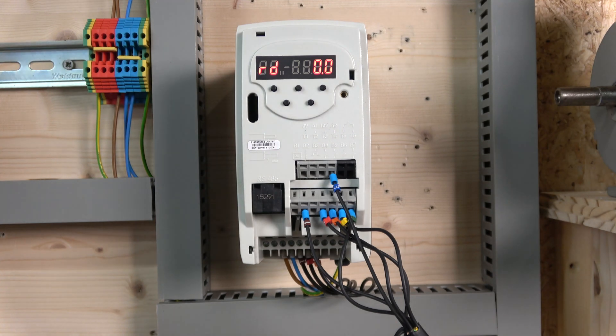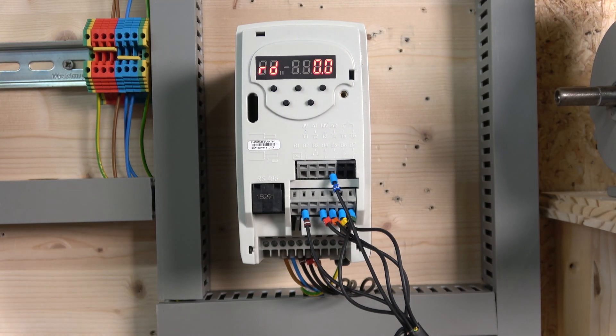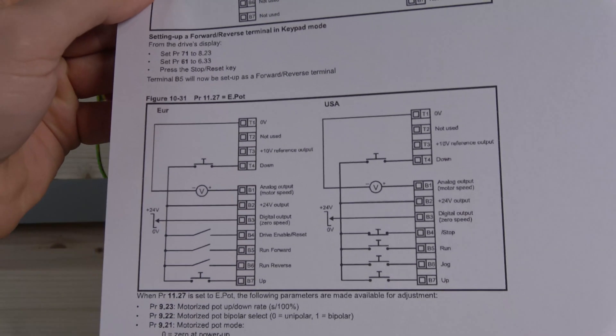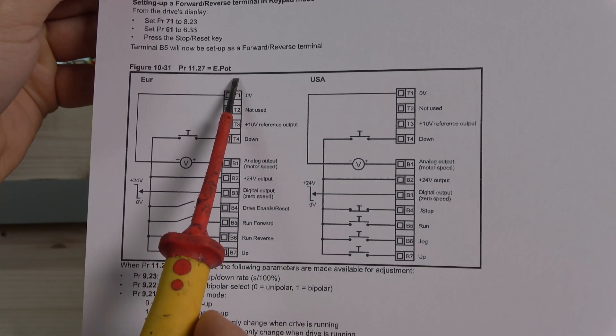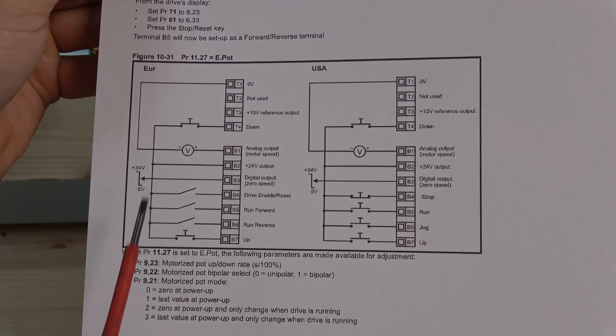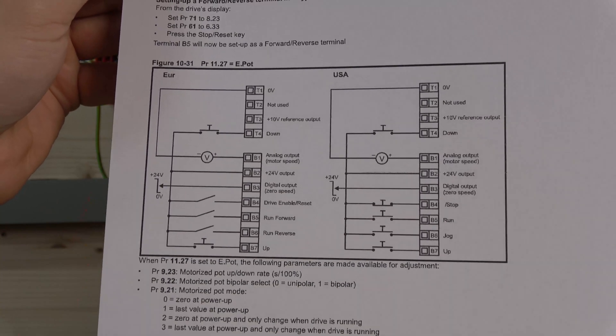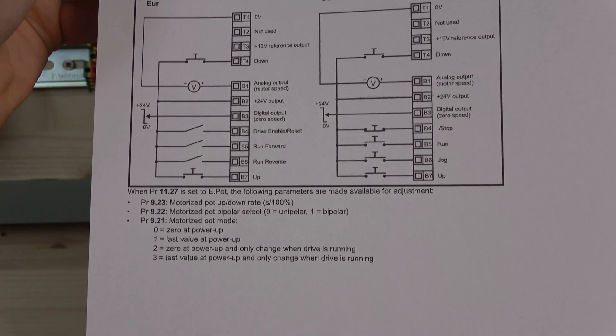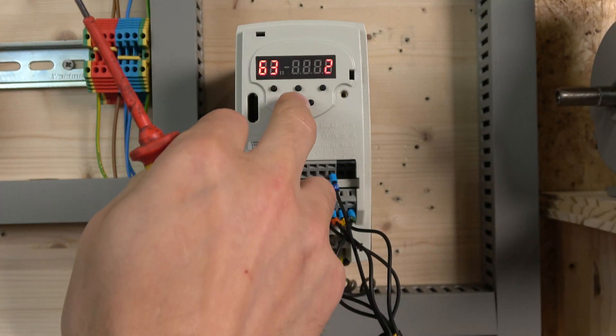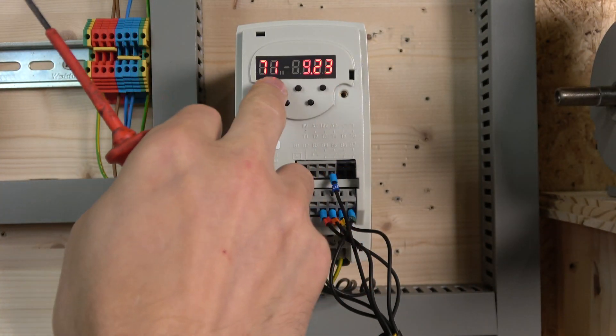So before we get started, there's a diagram. This is the one we're going to be following: E-pot. Even though it says 11.27, it is from the advanced menu, but in the normal menu that's parameter 5. You can see down here, that's the ones I was showing you.